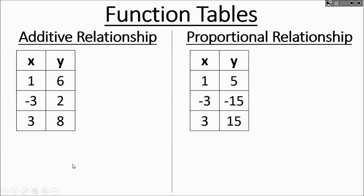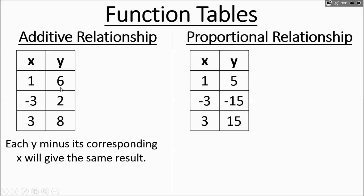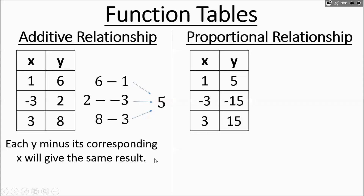For additive relationships, if you take each y and its corresponding x and subtract y minus x, you're going to get the same number for each ordered pair. So I'll do 6 minus 1, then 2 minus negative 3, then 8 minus 3. If you understand integer concepts, 2 minus negative 3 really means 2 plus 3. They all work out to 5.